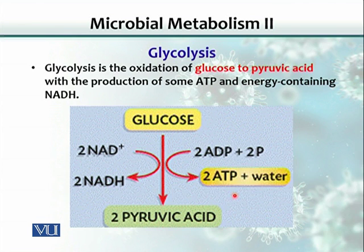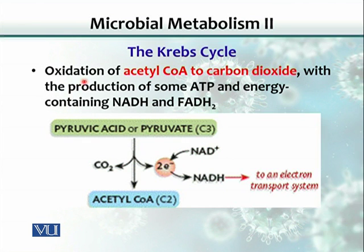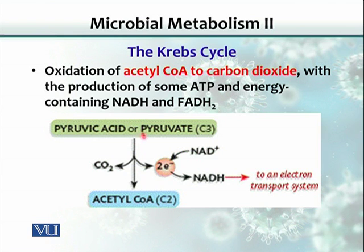In the Krebs cycle, which is basically the oxidation of acetyl-CoA to carbon dioxide, some ATP and energy-containing NADH and FADH2 are produced. These NADH and FADH2 are then channeled into the electron transport chain to make more ATP. Pyruvate goes through the Krebs cycle and is ultimately converted into carbon dioxide and water, with lots of NADH and FADH2 molecules produced.